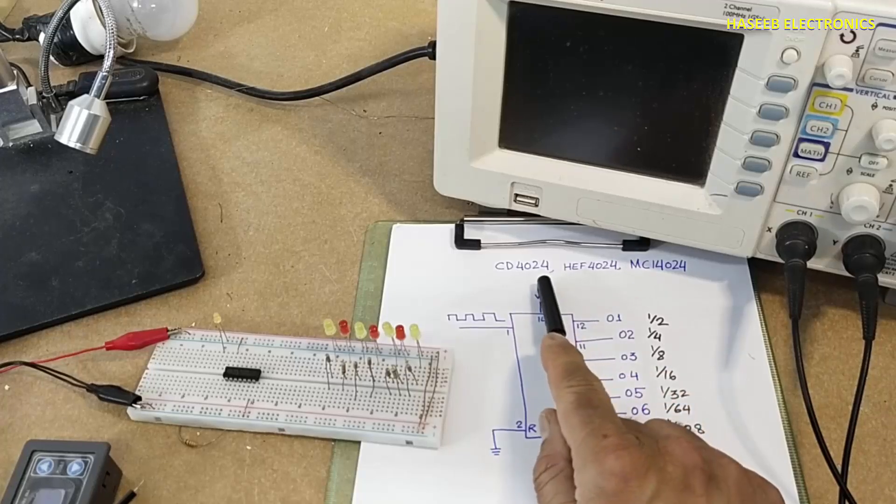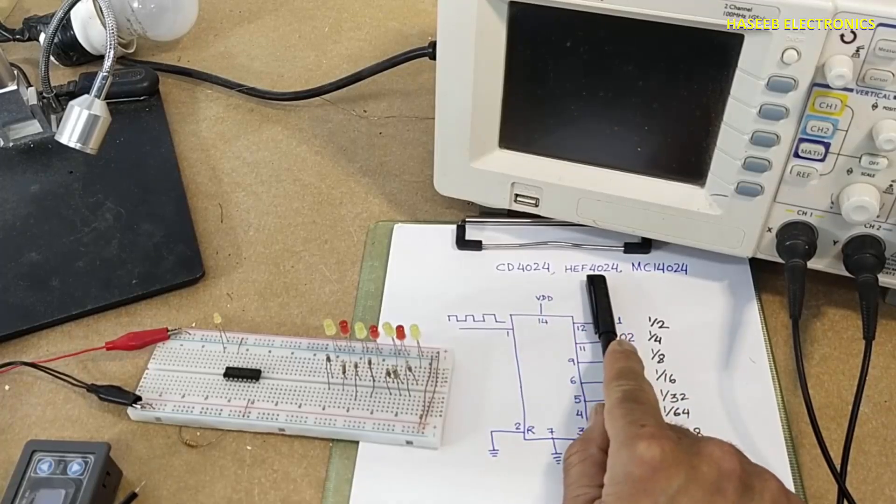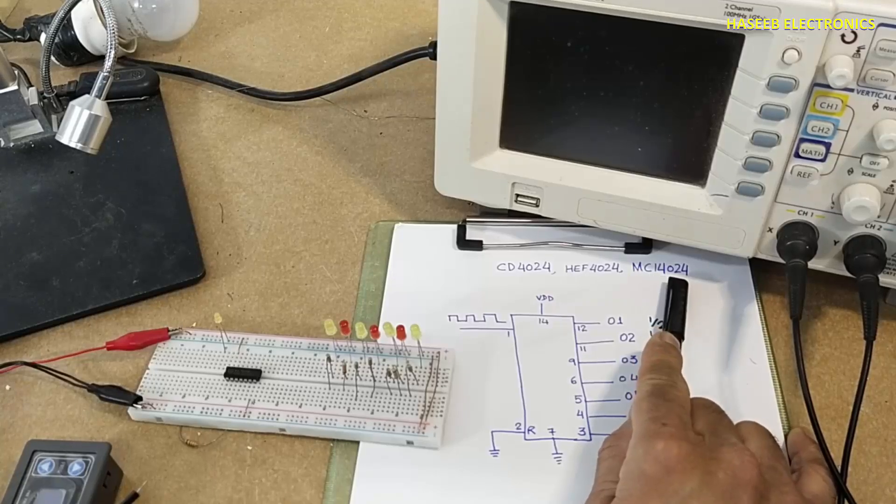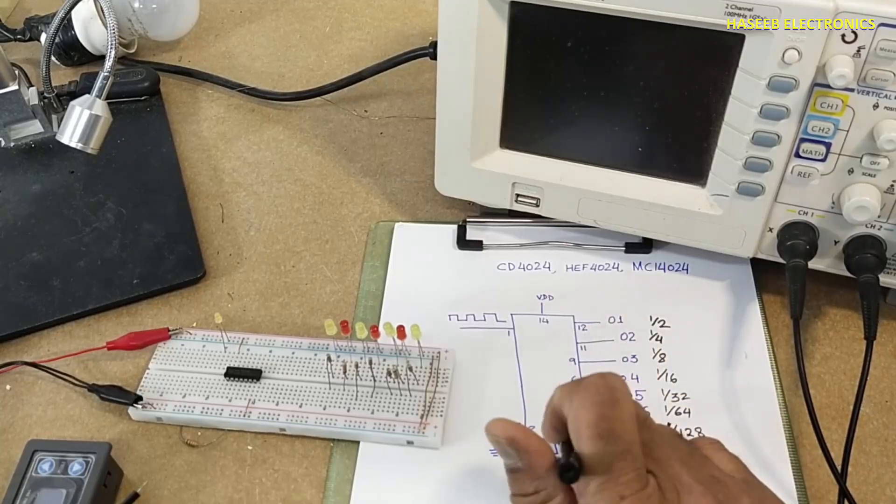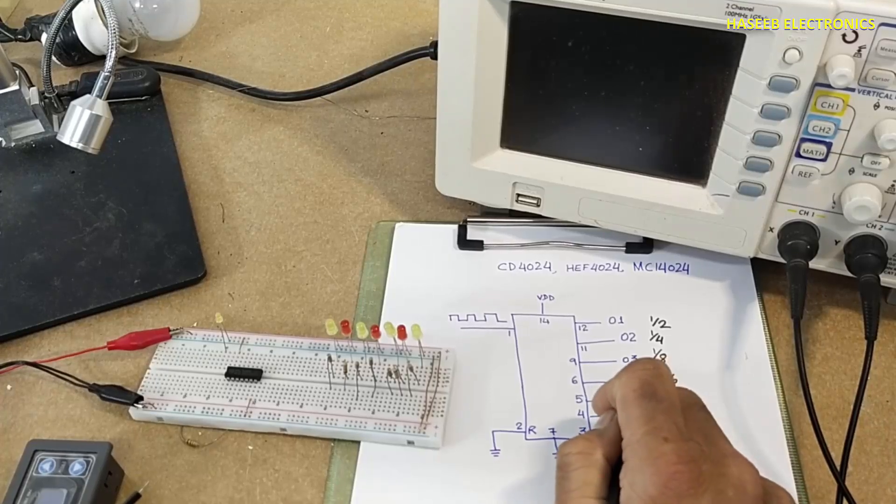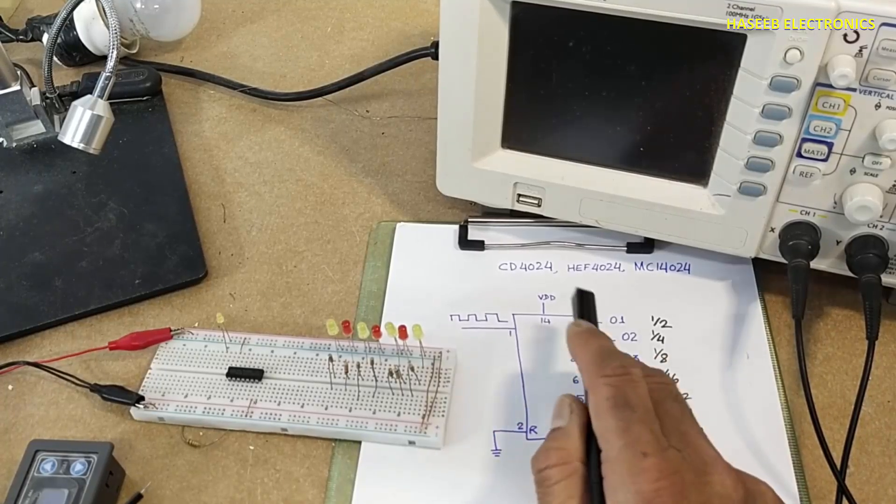We are discussing CD4024, HEF4024, or MC14024. It is a 7-stage binary counter or frequency divider, a synchronous counter CMOS IC.